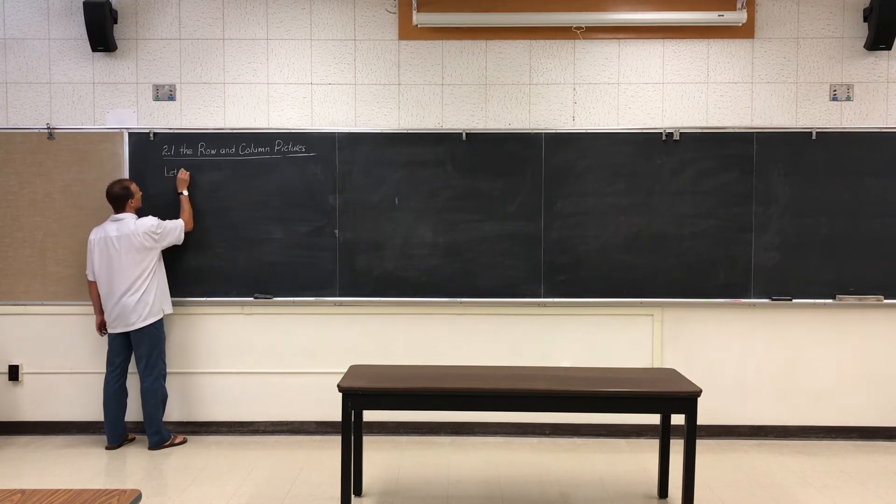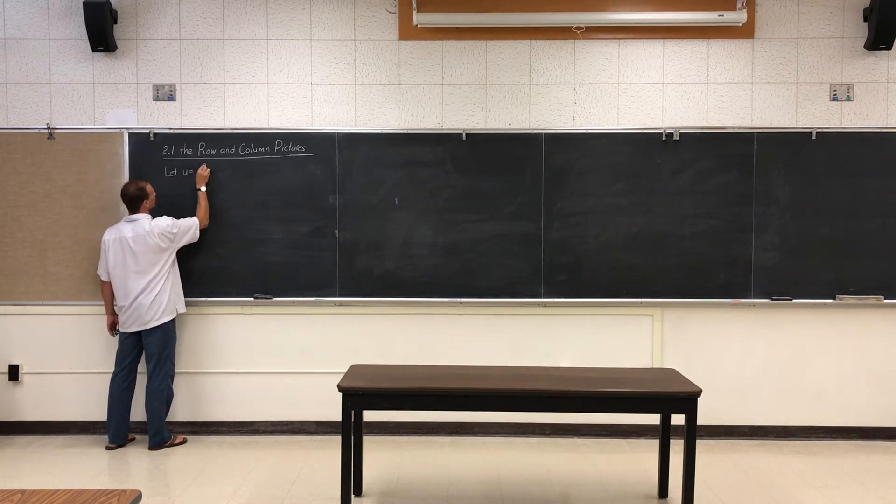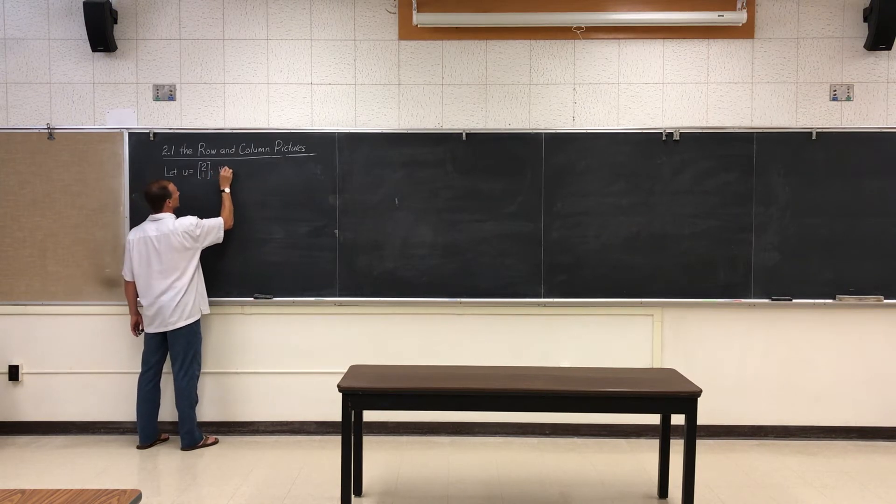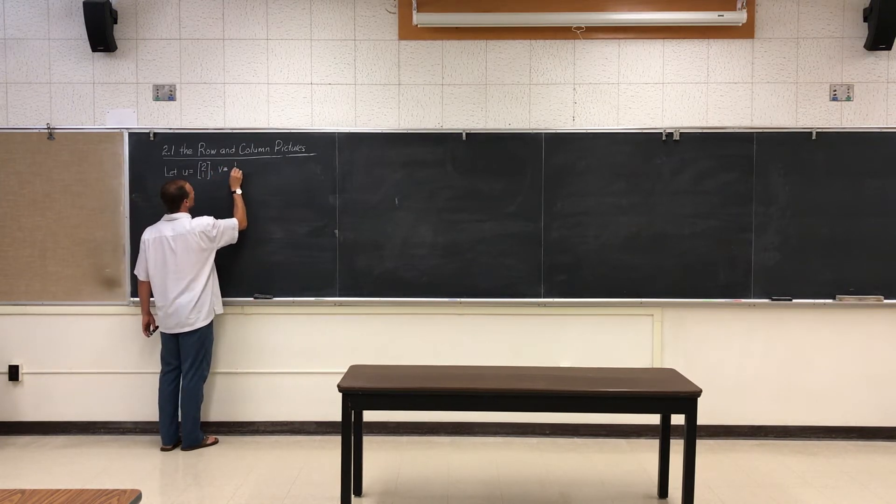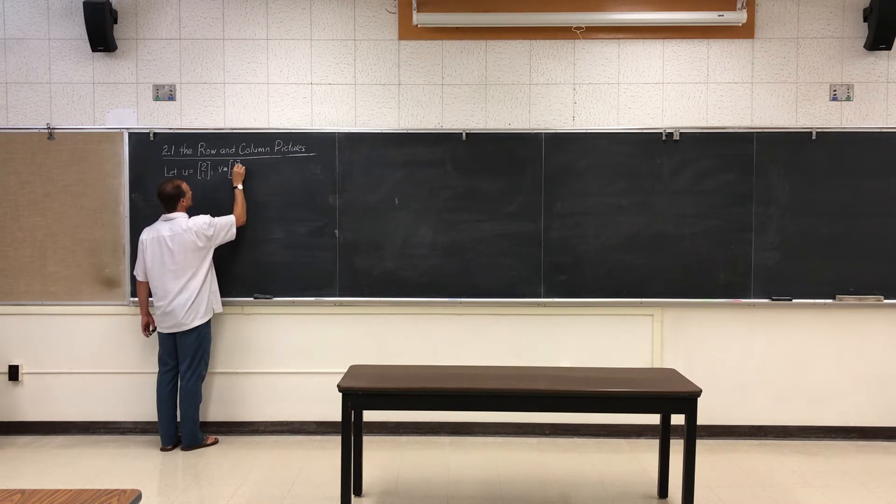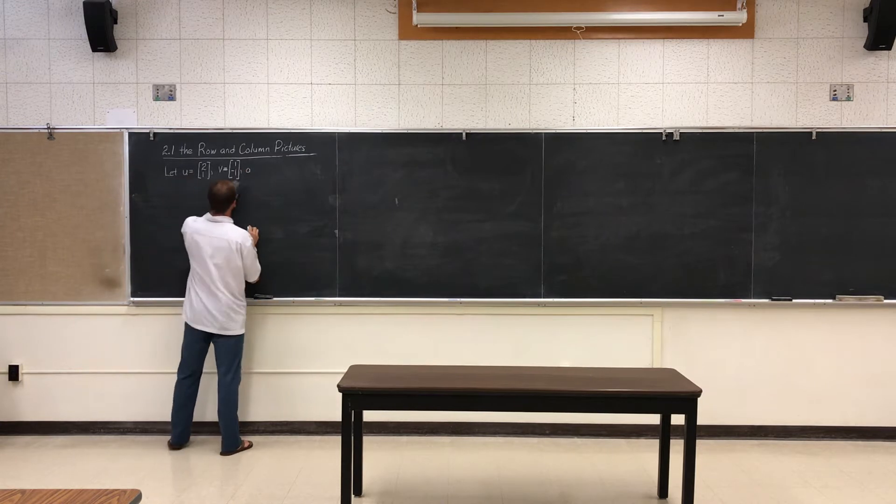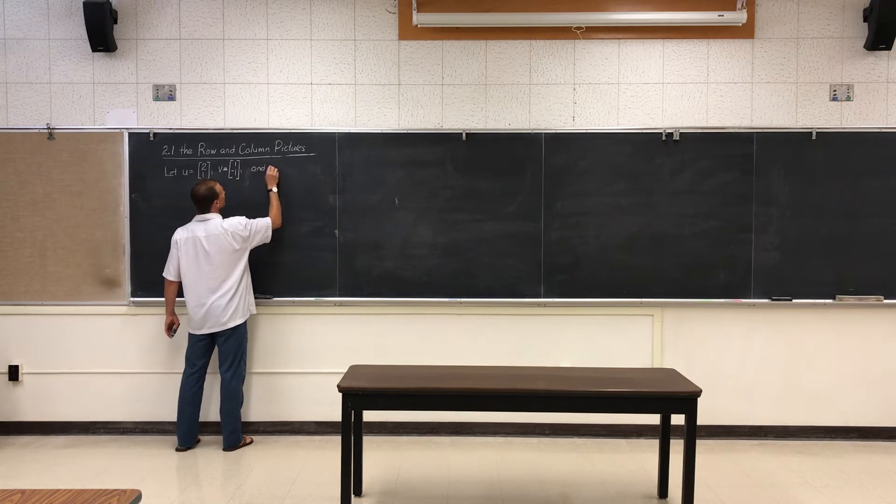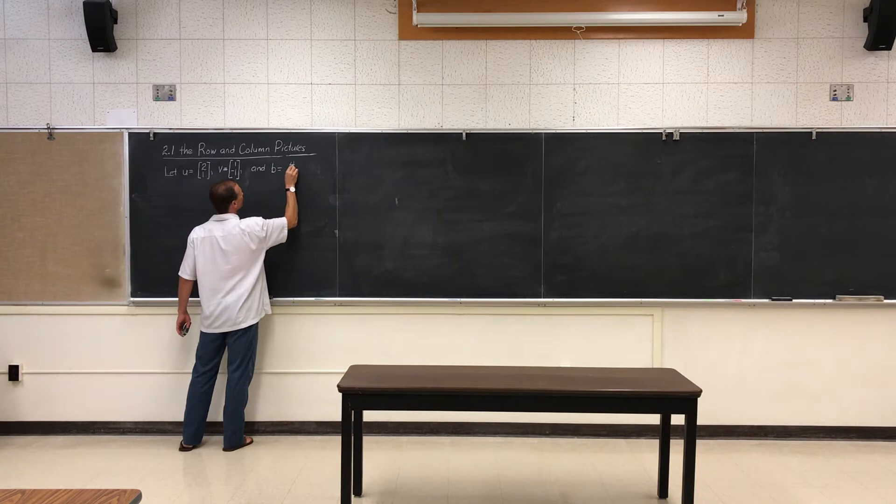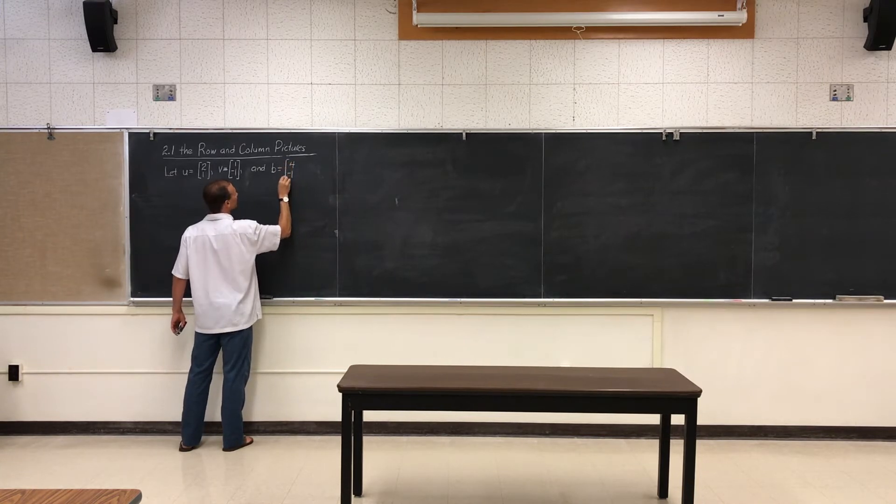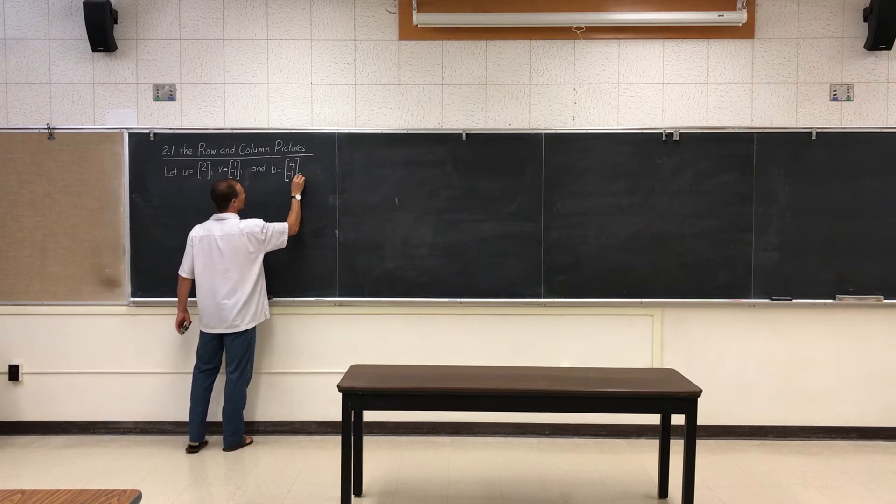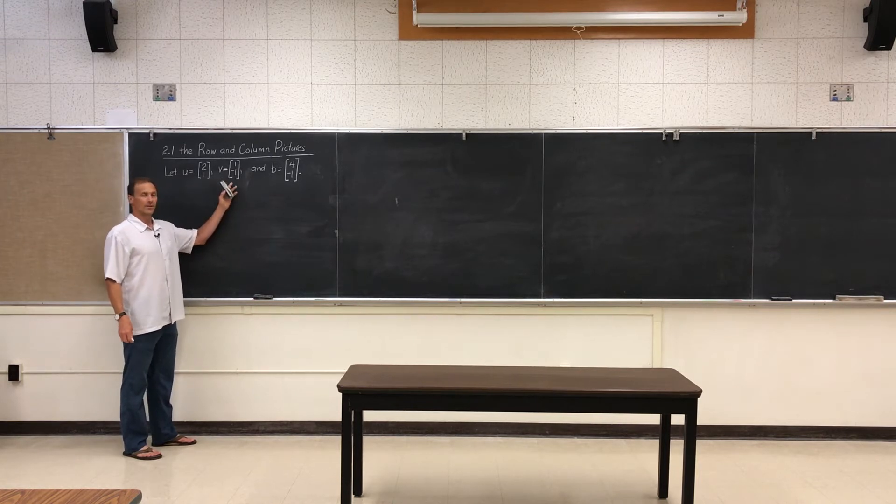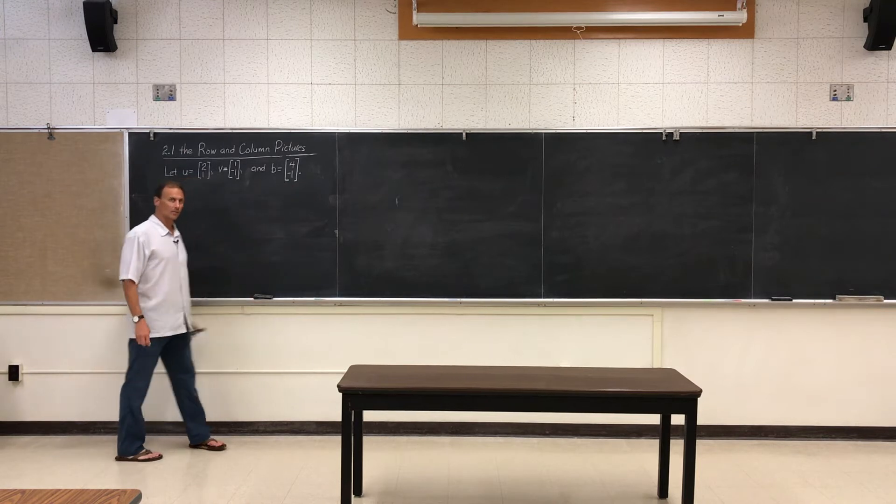Let U be the vector (2, 1), V will be the vector (1, -1), and B is going to be (4, -1). So what this means is that a linear combination of the vector U and the vector V gives me the vector B. So let's write that.